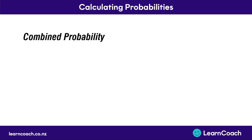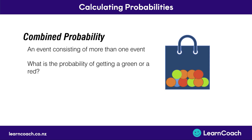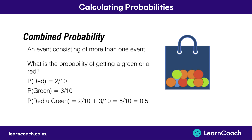Now if we look at combined probability, we know this is an event consisting of more than one event. An example is: what is the probability of getting a green or a red? If this is our bag of marbles, the probability of getting a red is 2 out of 10, as there are 2 red marbles out of 10. The probability of getting a green is 3 out of 10. If we were to pull a red or a green, the probability would be 0.5, as you're adding these together because you have a union.